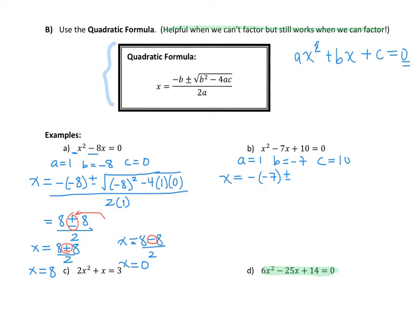All right, x equals negative b, which is negative 7, plus or minus the square root of b, which is negative 7 squared, minus 4 times a times c, all divided by 2 times a. So that gives us positive 7 plus or minus. Under the square root sign I have a 49 minus 40, which becomes a 9, and then divided by 2.